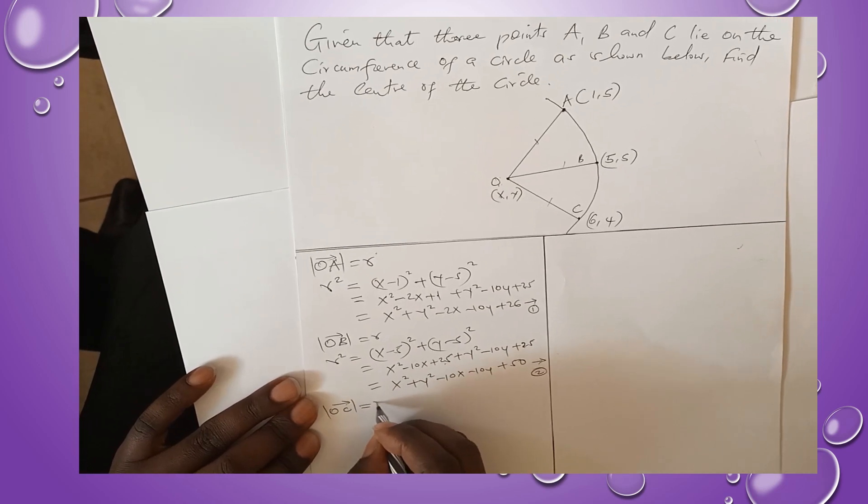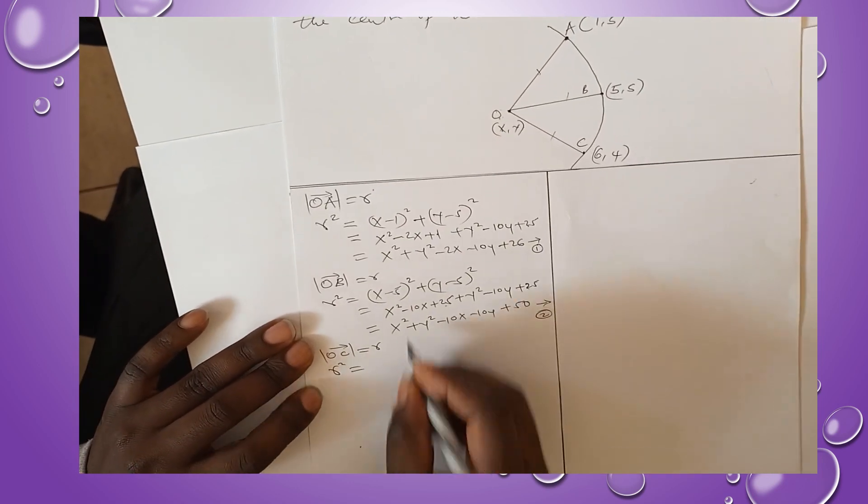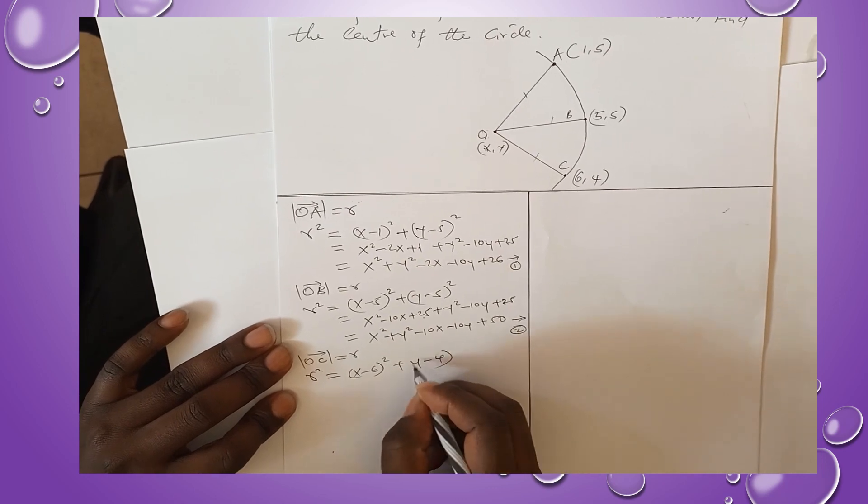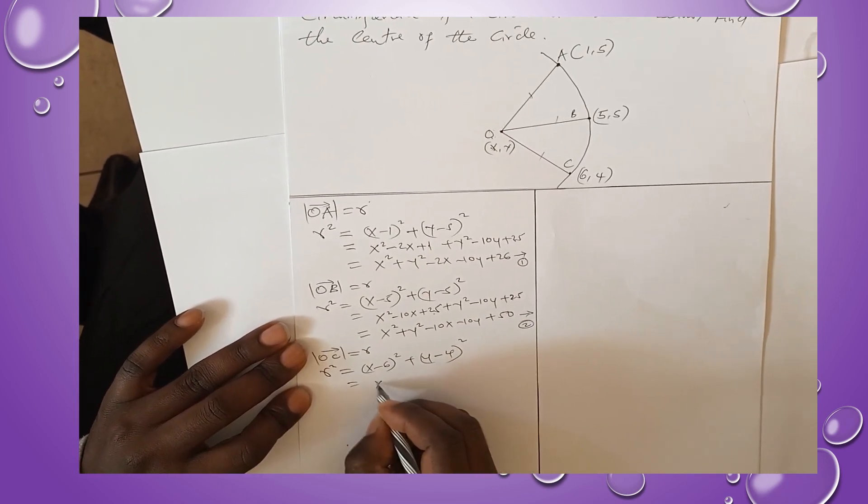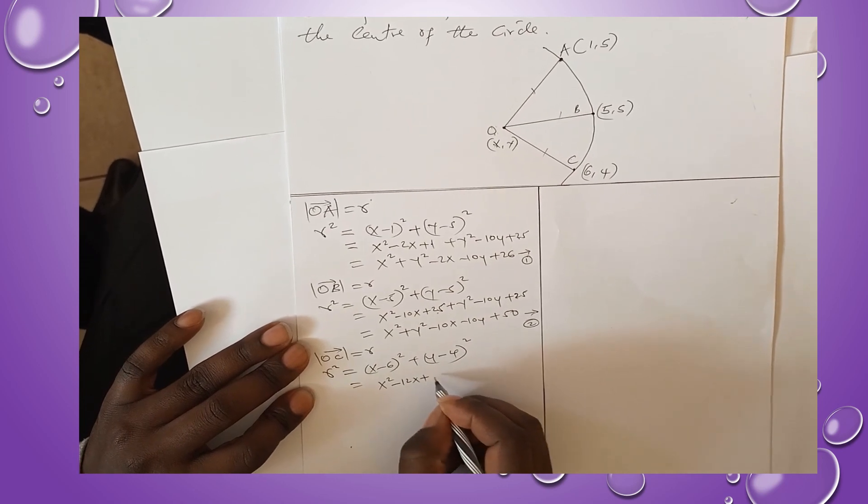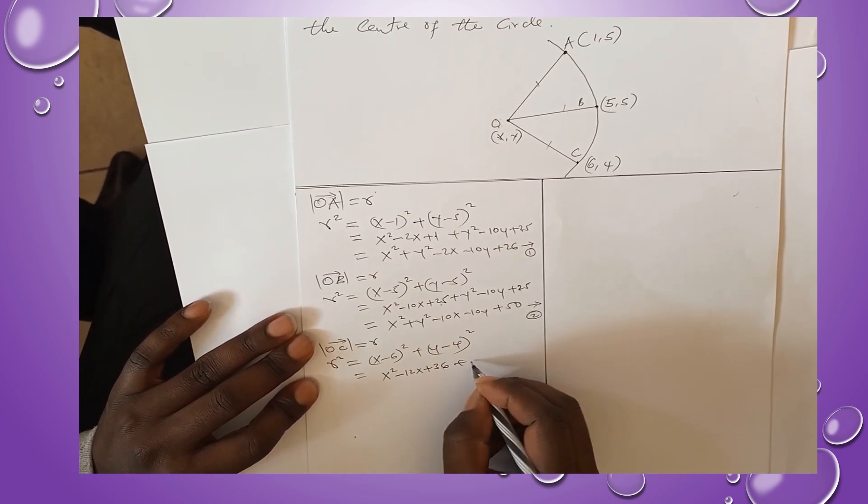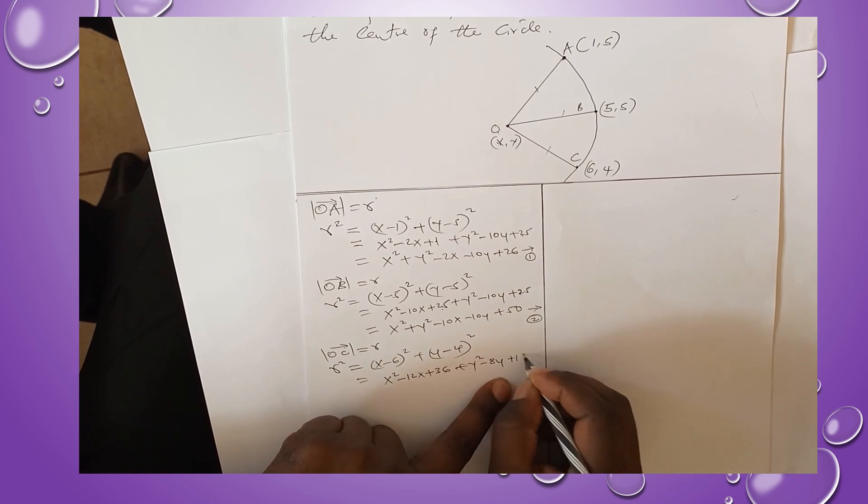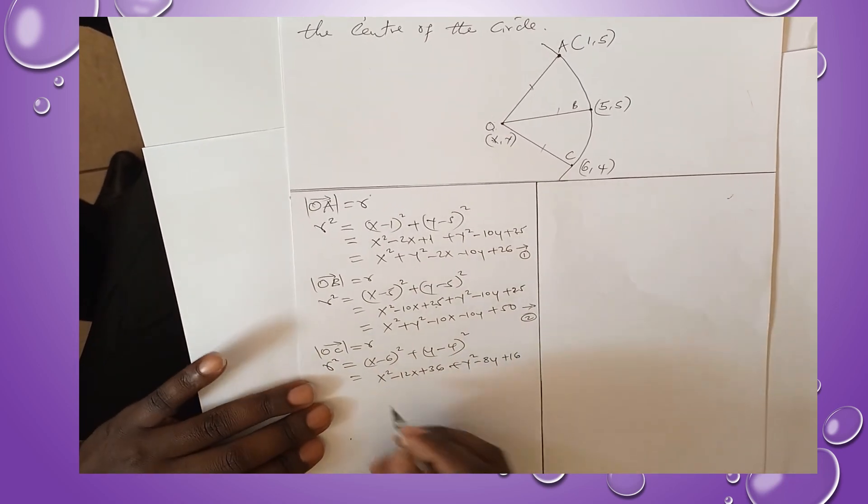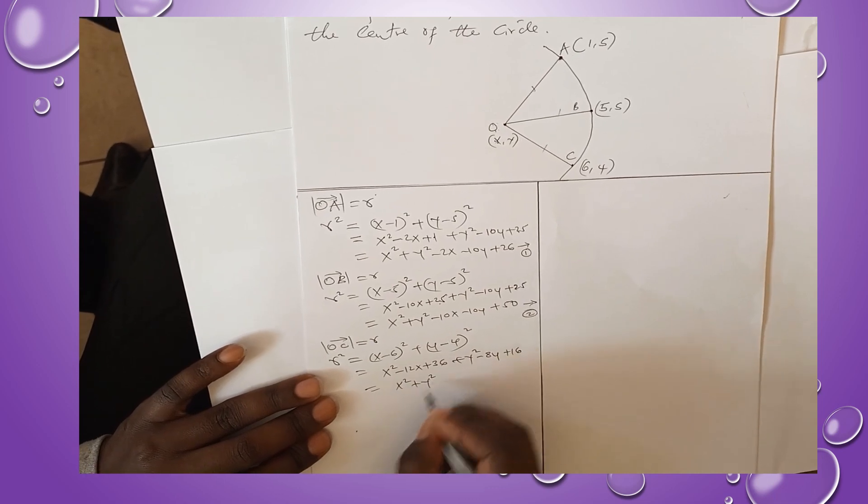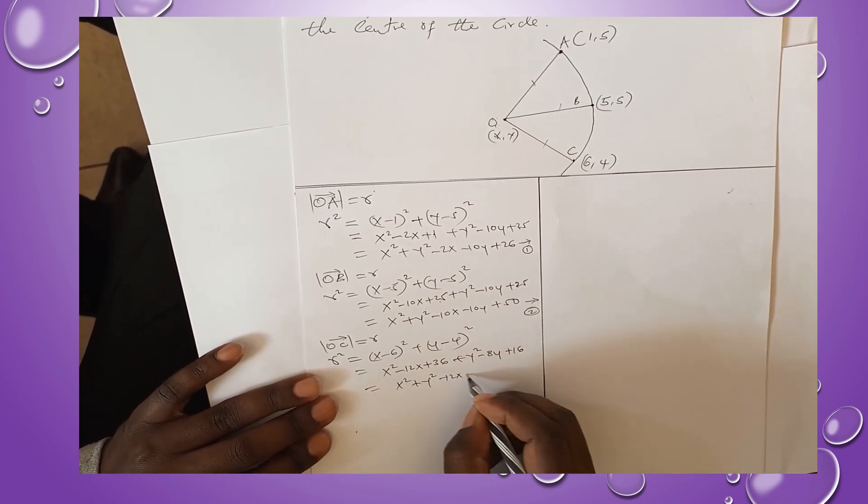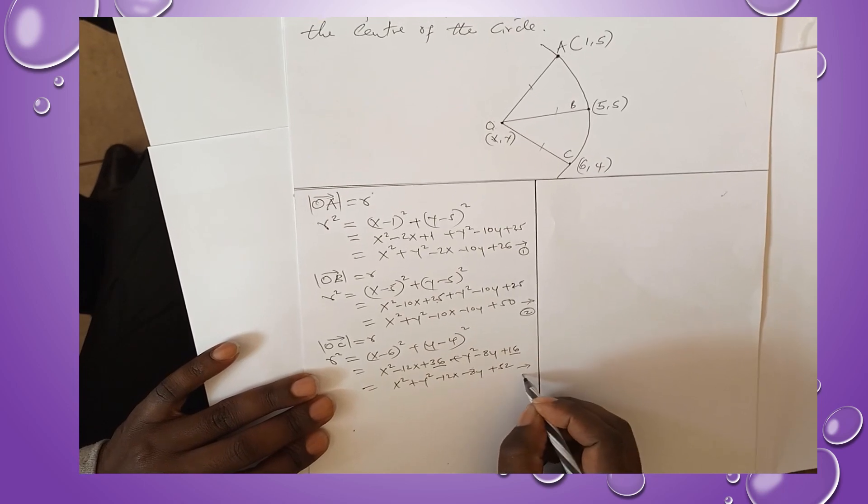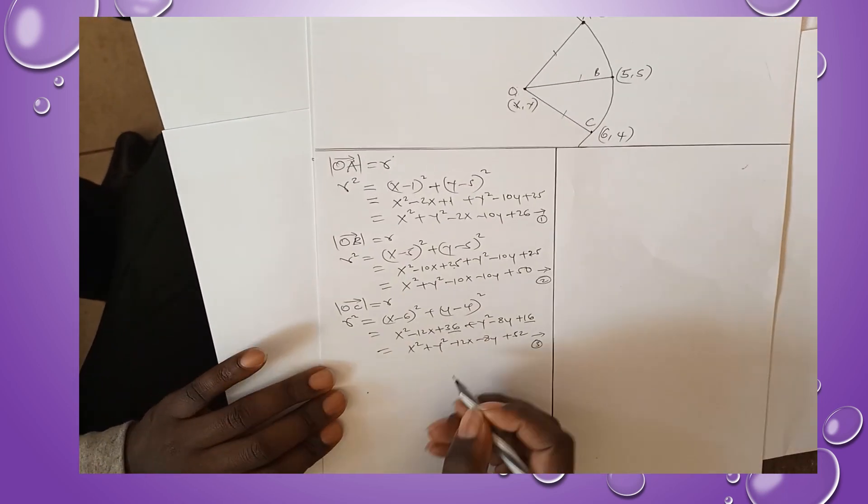Let's go to OC. The magnitude of OC will give us r² = (x - 6)² + (y - 4)². Expanding, we get x² - 12x + 36 + y² - 8y + 16. Putting like terms together: x² + y² - 12x - 8y + 52. So this is our third equation.